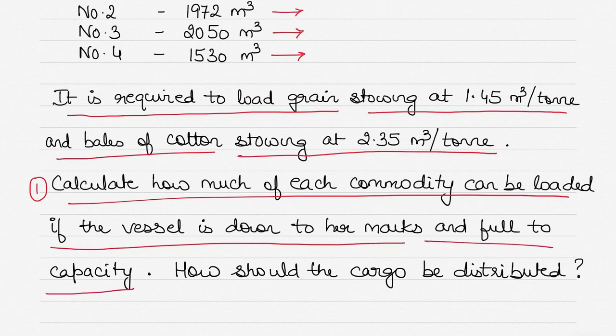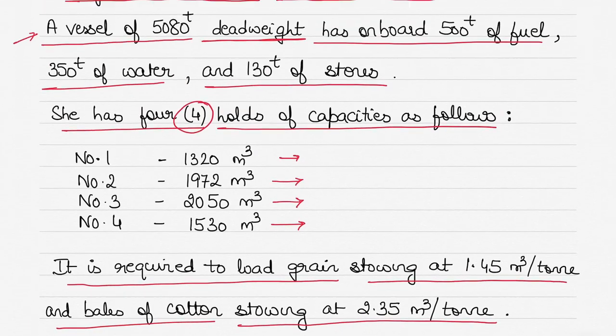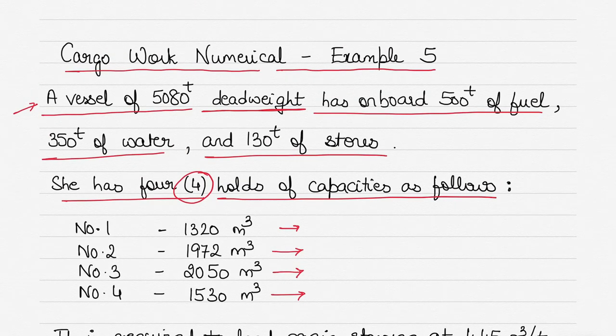Second thing is how should the cargo be distributed. In this question make sure that you take note that the vessel's deadweight is 5080 tons. You must know the meaning of deadweight, and it already has on board 500 tons of fuel oil, 350 tons of water, and 130 tons of stores. Think about how what you already have on board will impact the deadweight.